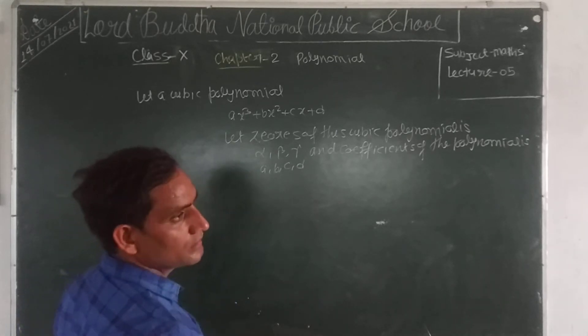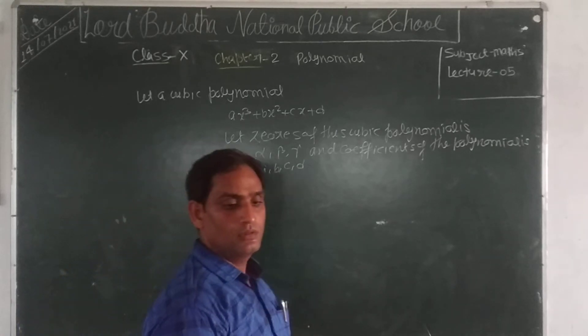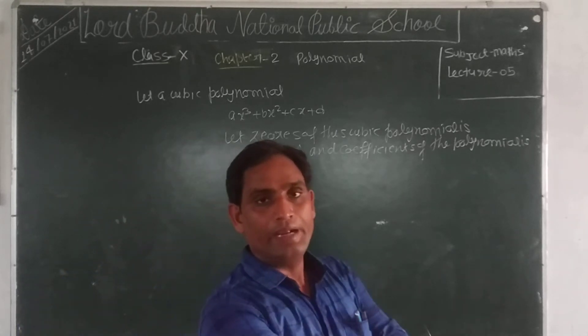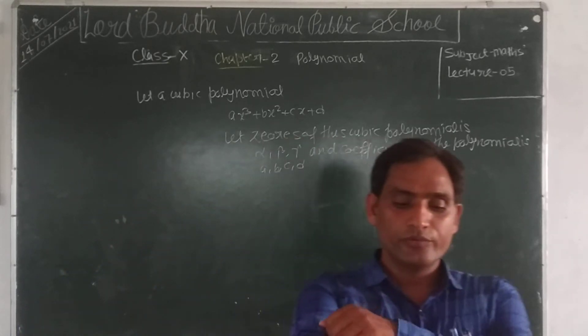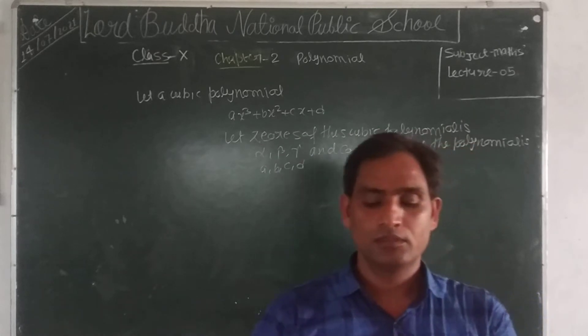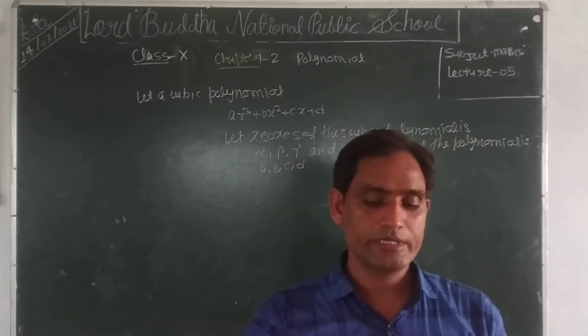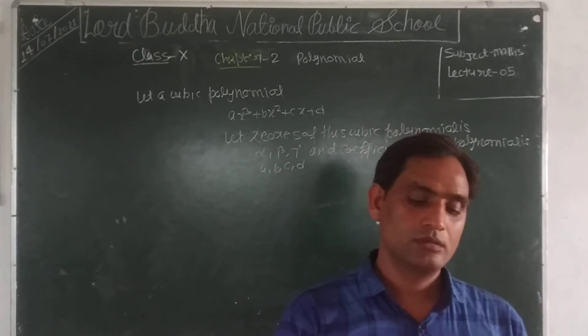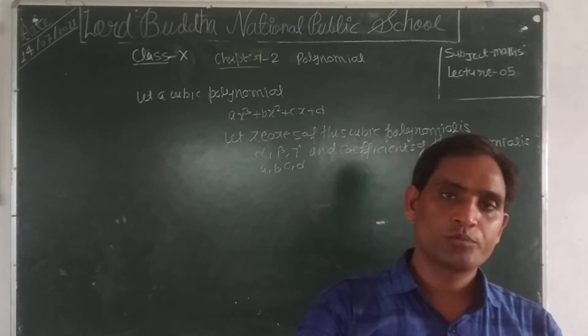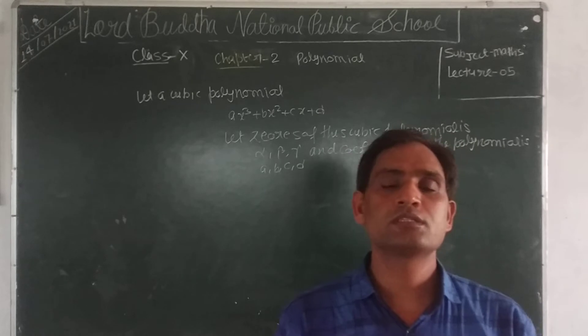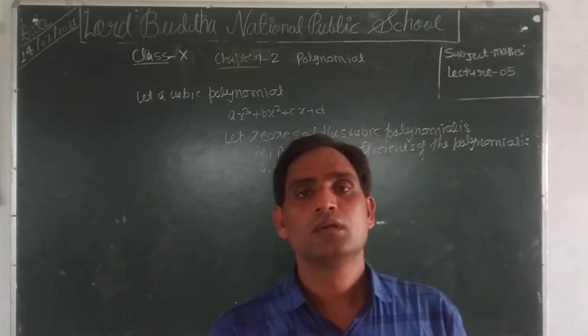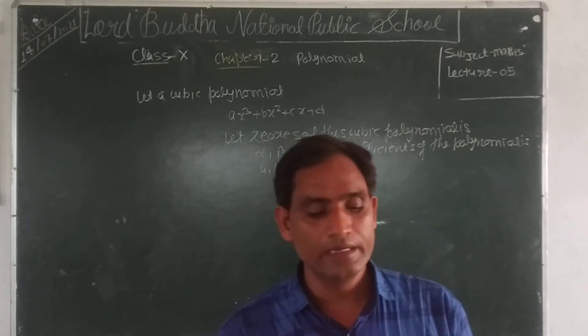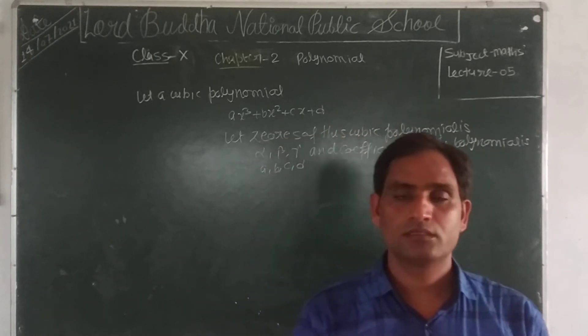Now we find the relationship between the zeros — that is alpha, beta, gamma — and the coefficients — that is A, B, C, and D.